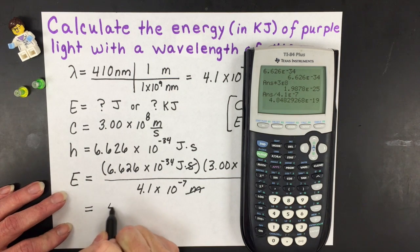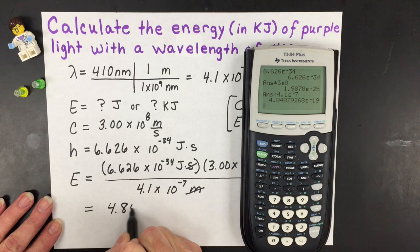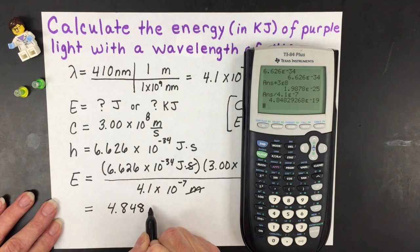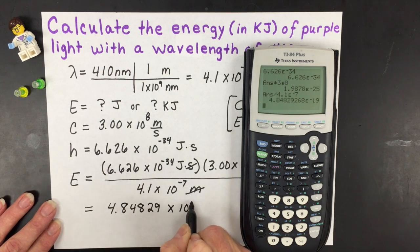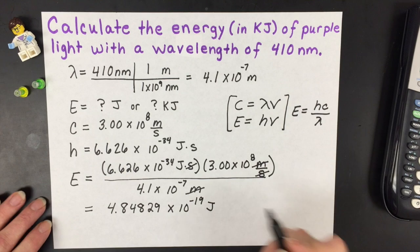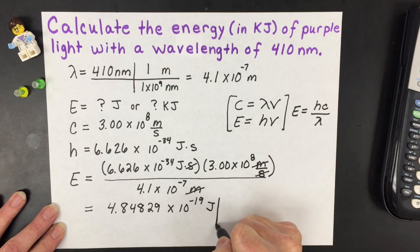And we get a very long answer on our calculator, 4.84829, I'm just going to stop writing there because I can't keep that many significant figures, times 10 to the negative 19th joules.